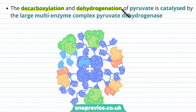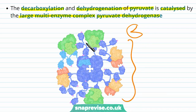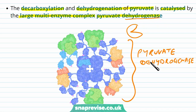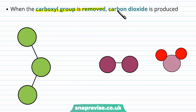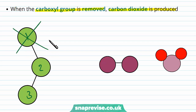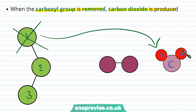The decarboxylation and the dehydrogenation of pyruvate are both catalyzed by one large multi-enzyme complex, and the enzyme is called pyruvate dehydrogenase. Pyruvate dehydrogenase has many different protein parts to it — it's a very complex enzyme, but just remember that even though it is called a dehydrogenase, it also catalyzes the decarboxylation and the removal of that carbon group. When the carboxyl group gets removed, carbon dioxide is produced as a product. So we've got three carbons in the pyruvate, and as the first carbon is removed, the carbon goes into the formation of a carbon dioxide molecule, leaving two carbons in the final acetyl product.